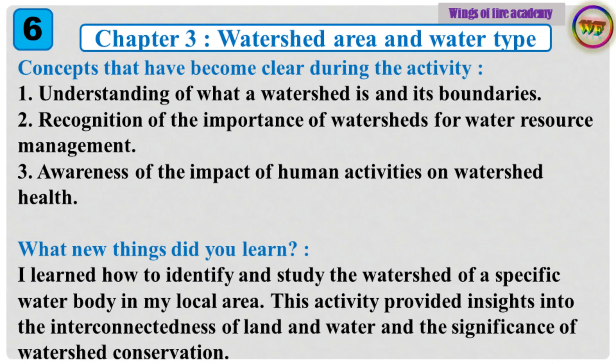Concepts that have become clear during the activity: 1. Understanding of what a watershed is and its boundaries. 2. Recognition of the importance of watersheds for water resource management. 3. Awareness of the impact of human activities on watershed health.